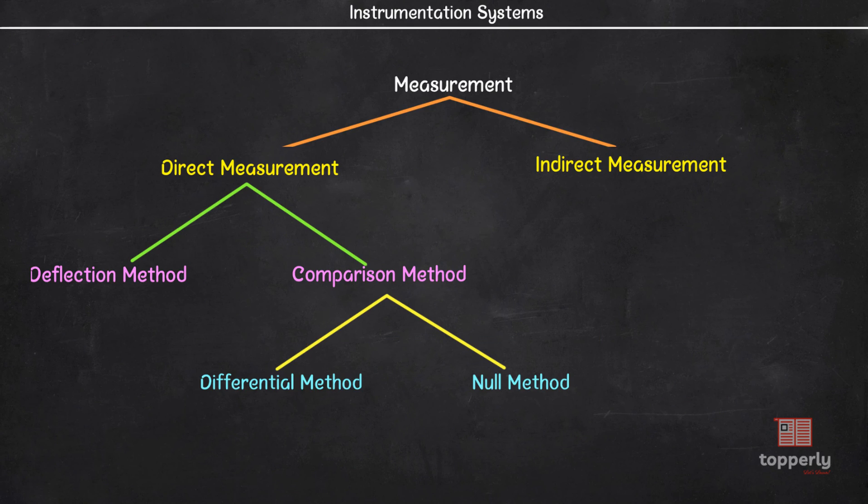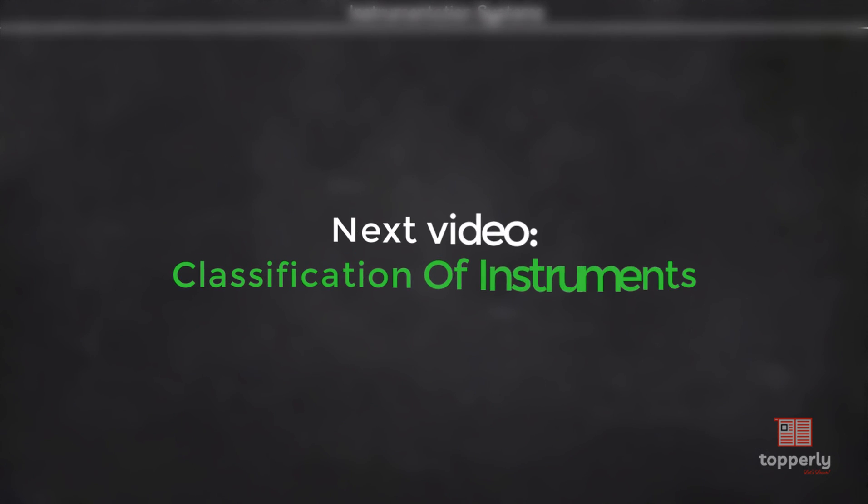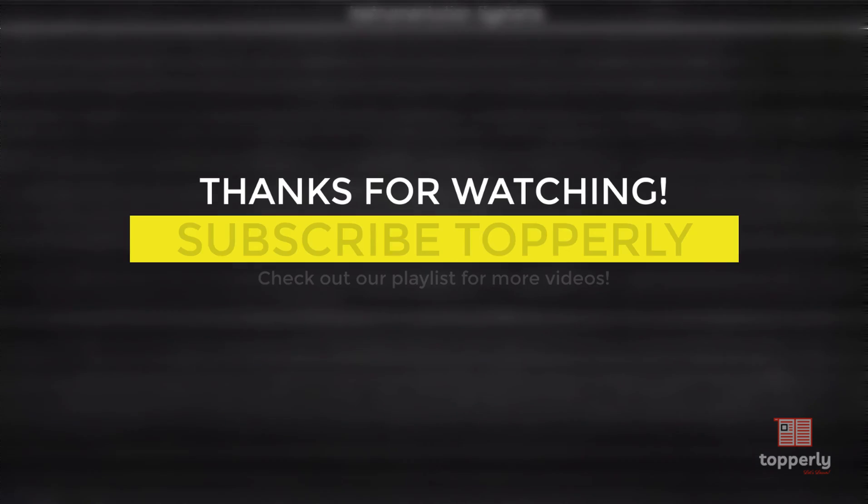So, that's all for this lecture. To summarize, we learned that there are mainly two methods of measurement: direct measurement and indirect measurement. Of this, we had seen that the direct measurement again has many subclasses and we studied each of these subclasses in detail. In the next video, we will learn about the classification of instruments. Thanks for watching and have a nice day.